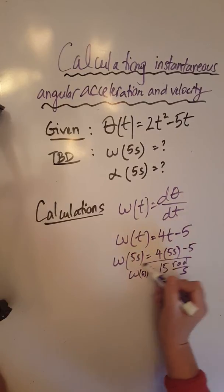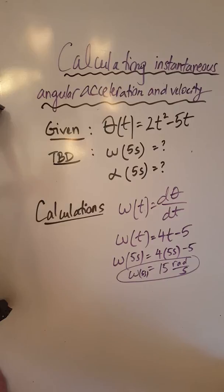That's the angular speed at 5 seconds. To get the angular velocity you would need to remember that's a vector, and the direction will be given by the right-hand rule like I showed you in my PowerPoint lecture slides.